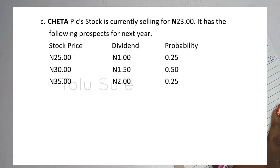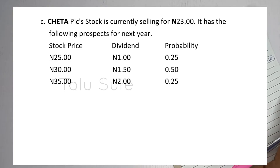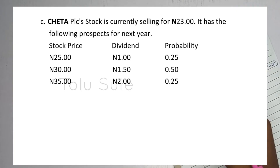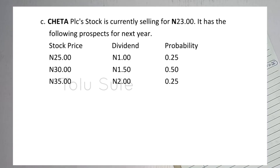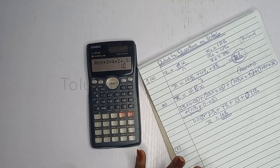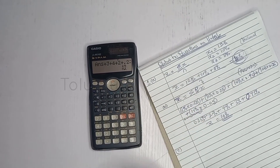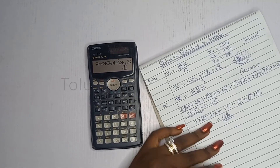The third situation on screen: Cheta PLC stock is currently selling for 23 naira. They give prospects for next year — the stock price could be 25, 30, or 35 naira. They also give dividends and probabilities: 25% for the 25 naira price, 50% for 30 naira, and 25% for 35 naira. This calls for the holding period approach.